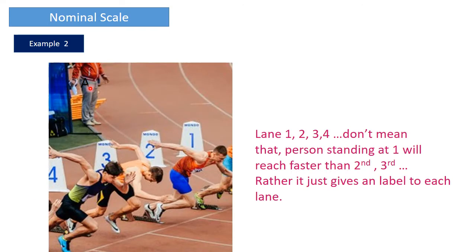Let us look at another example of nominal scale. You can see athletes standing in different lanes for a running race. The purpose is to label or identify each person standing in different lanes. It doesn't mean that the person in lane number one is better than the person in lane number two. The purpose is just to distinguish between different lanes — it classifies into different groups rather than giving an order.